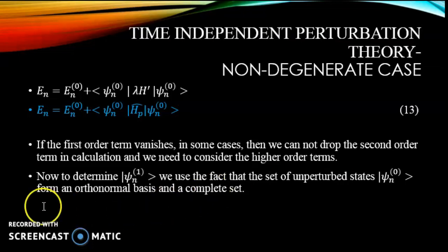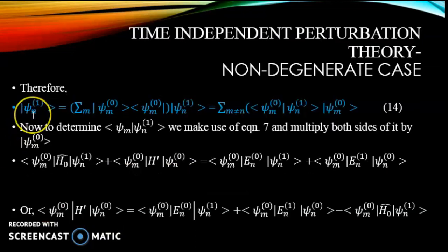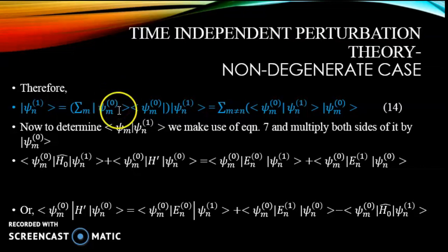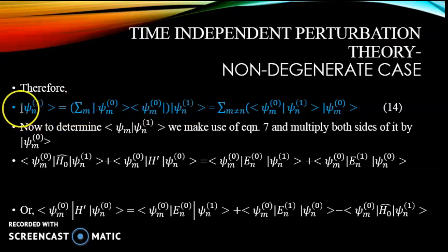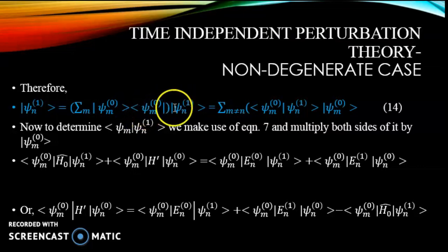To determine psi_n1, the first-order correction to the eigenfunction, we use the fact that the set of unperturbed states psi_m0 forms an orthonormal and complete basis. Therefore we can write psi_n1 as the expansion: psi_n1 = summation over m of |psi_m0⟩ ⟨psi_m0 | psi_n1⟩. Rearranging terms, this gives psi_n1 = summation over m of ⟨psi_m0 | psi_n1⟩ |psi_m0⟩.